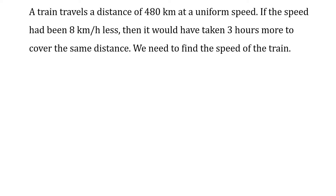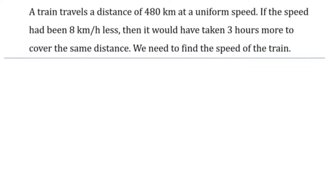In this question we are given a train travels a distance of 480 km at a uniform speed. The distance is 480 km and the speed of the train is uniform. If the speed had been 8 km per hour less, then it would have taken 3 hours more to cover the same distance. We need to find the speed of the train.